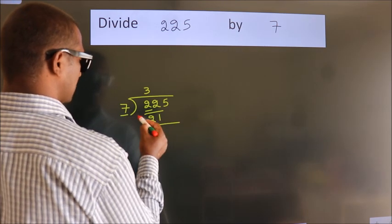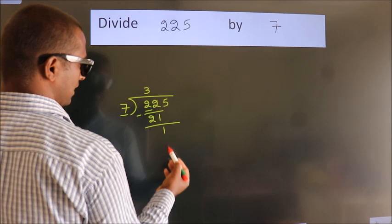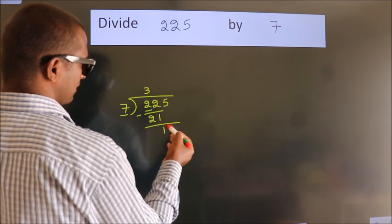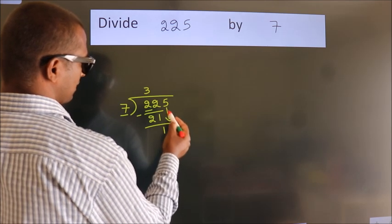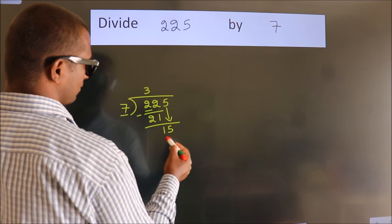Now we should subtract. We get 1. After this, bring down the beside number. So 5 down. So 15.